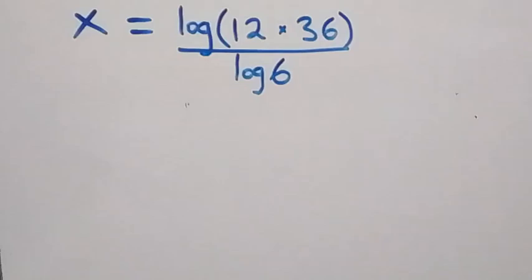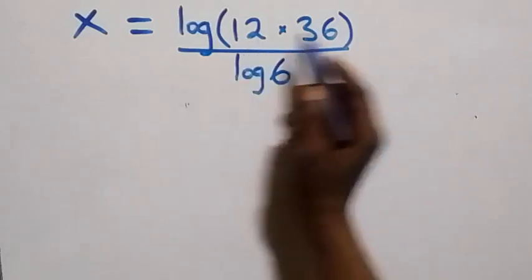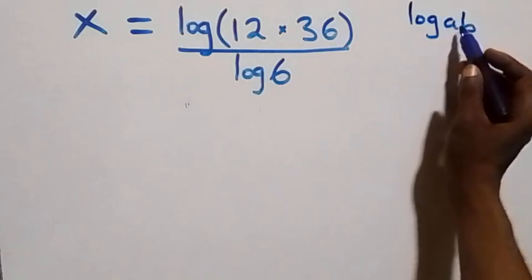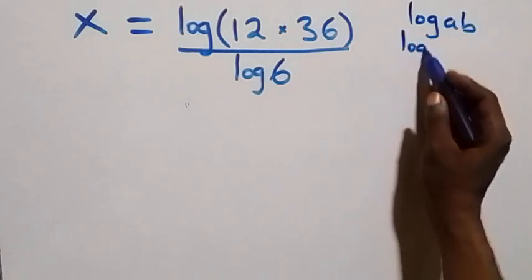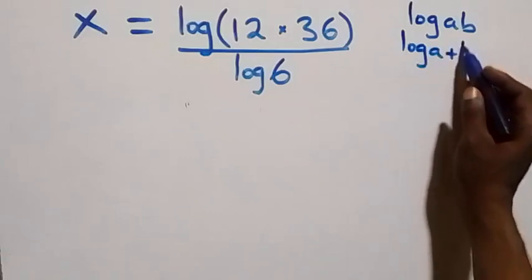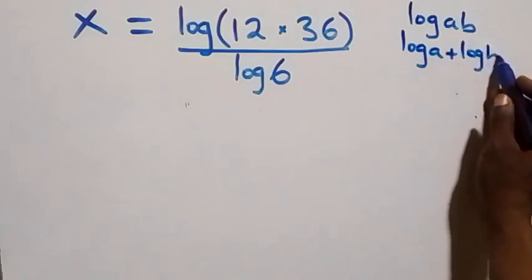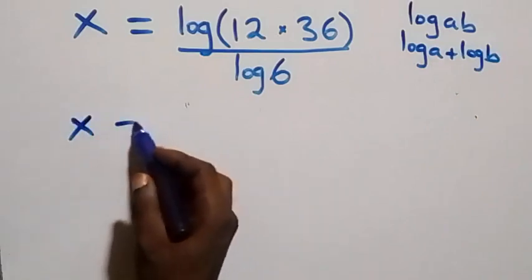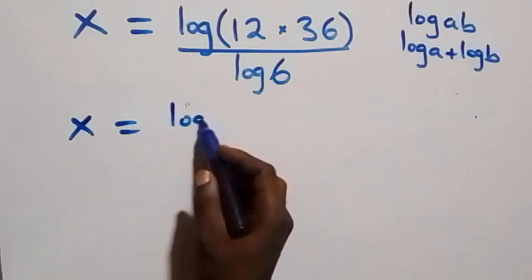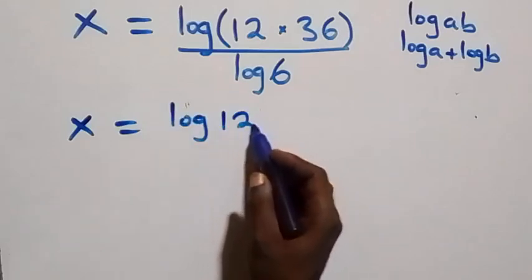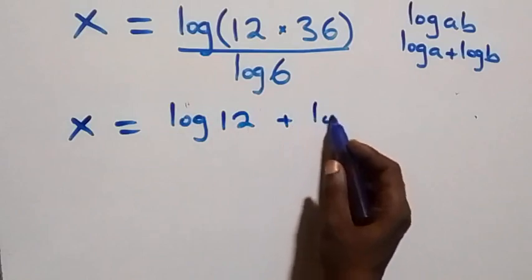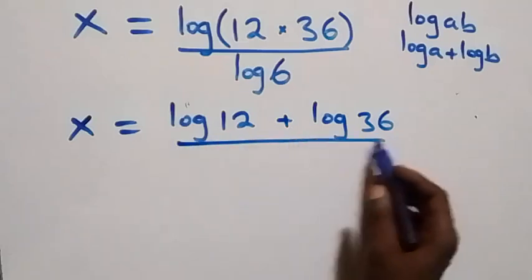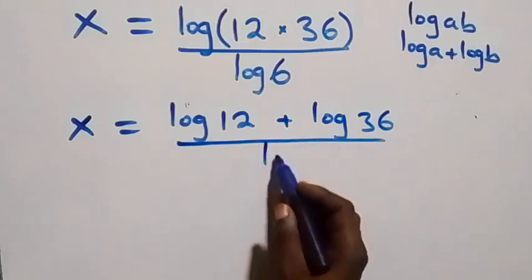From here, applying the product law of logarithm — log(a times b) equals log a plus log b — we have x equals log 12 plus log 36, all over log 6.